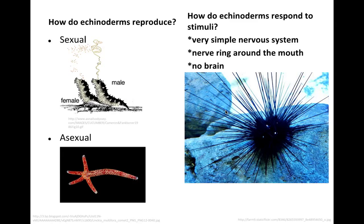How do echinoderms respond to stimuli? Not super well. They have a very simple nervous system — all it really contains is a nerve ring around their mouth with a nerve running out through their arms. There is no brain in echinoderms.